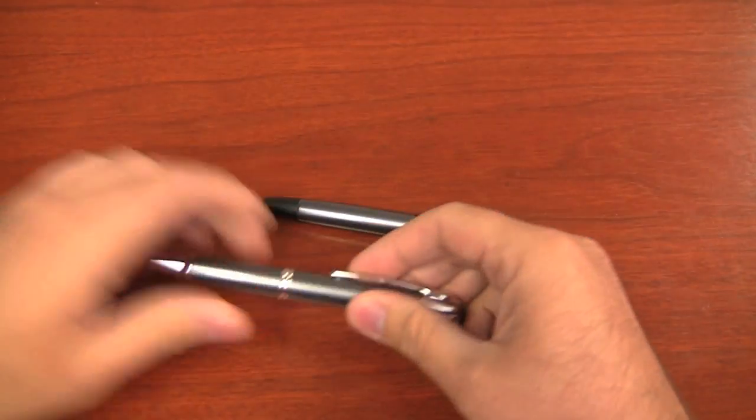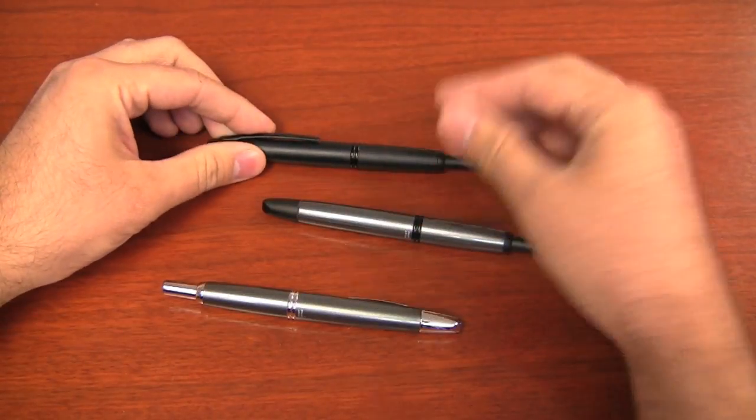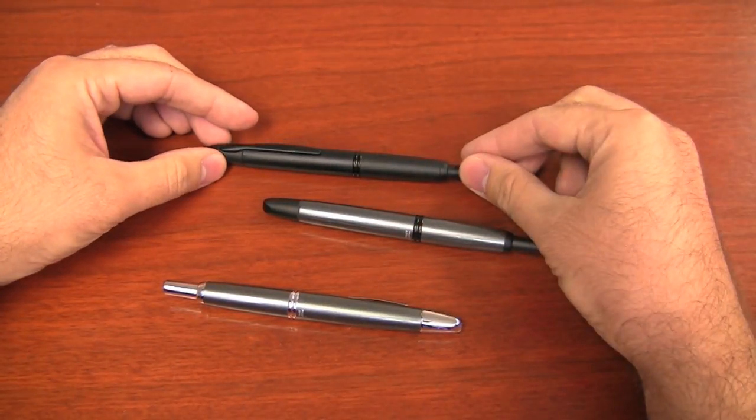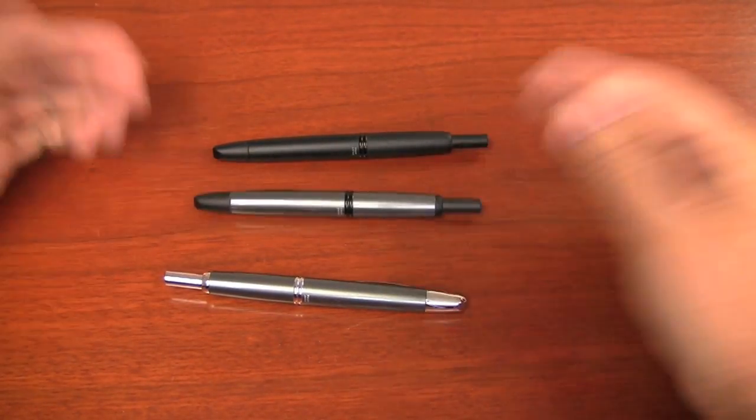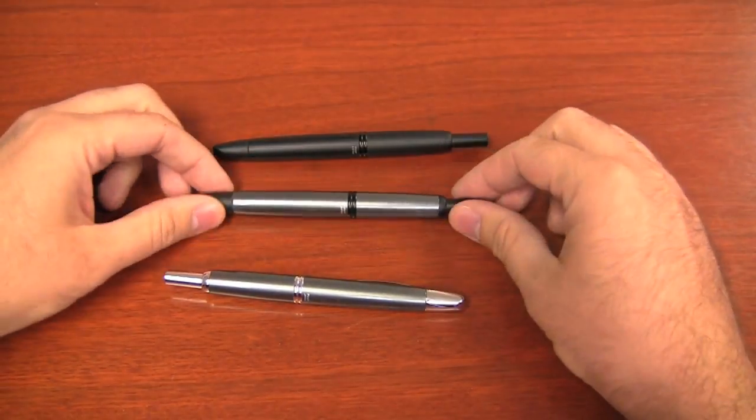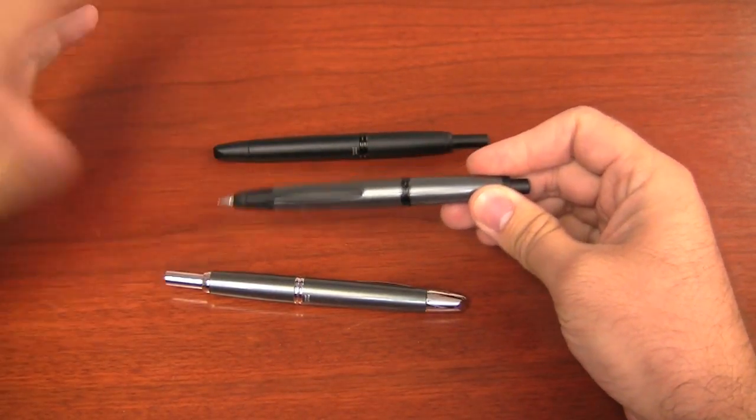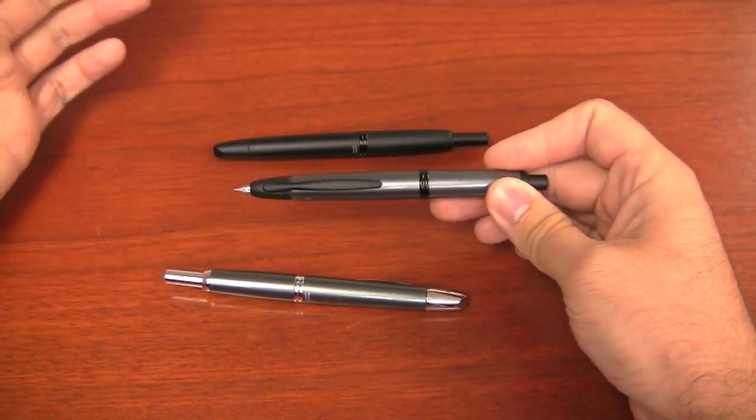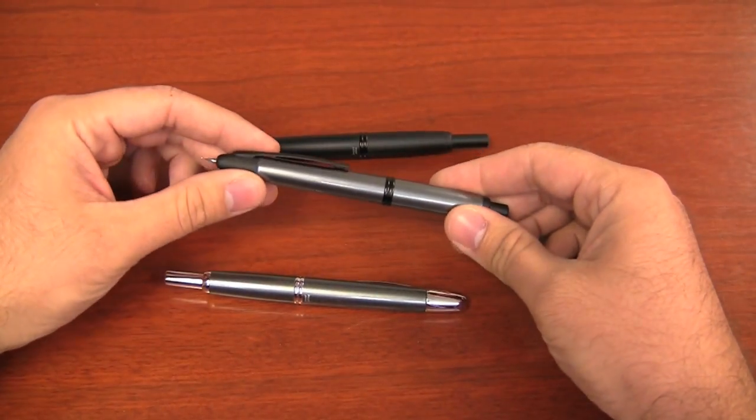Okay, so basically, from what I can tell, Pilot has taken the Black Matte Vanishing Point and put a gunmetal finish on the body and mated the two together to make the gunmetal with black matte accent. I think that's what it's called. I call it the gun matte just to make it easier. But anyway, that's the pen. It's the same vanishing point that you know and love.